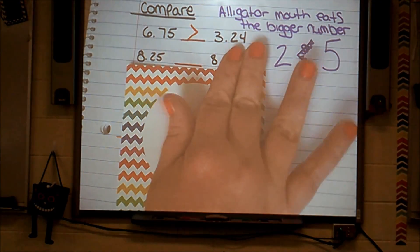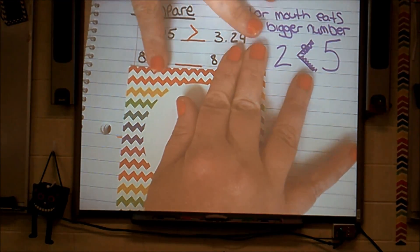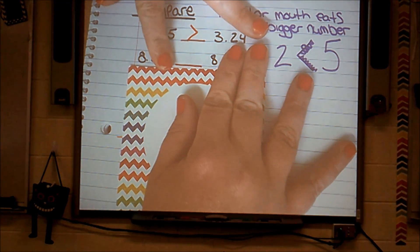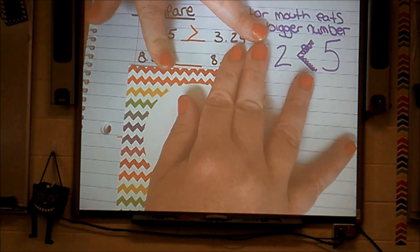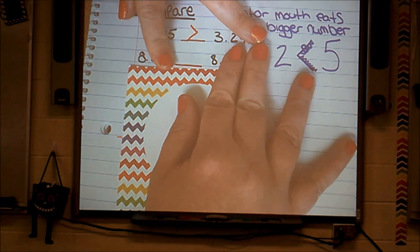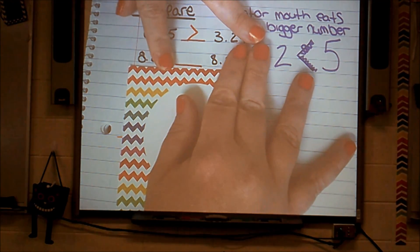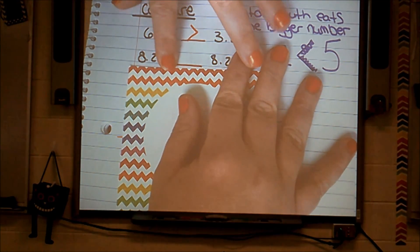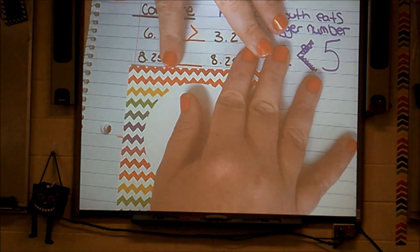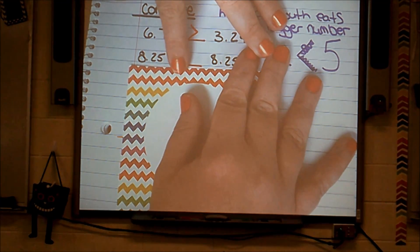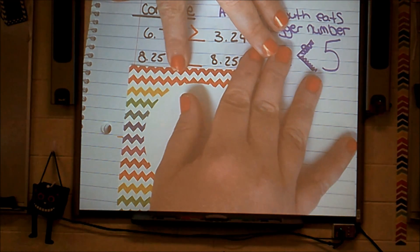But we're going to attack this the same way we did the first problem. I'm going to look at the number in my largest place value. Well, that doesn't do a whole lot to help me now. I have an 8 on my left and I have an 8 on my right. So I have to move to my next place value. My next place value is a 2 and a 2. Still does not help me. They're still the same. I have to move to my next place value. A 5 and a 5. Same again.